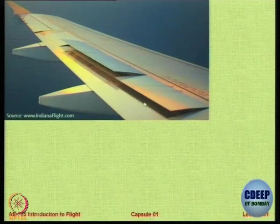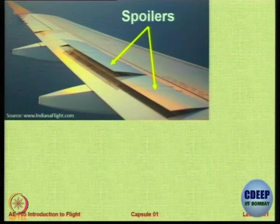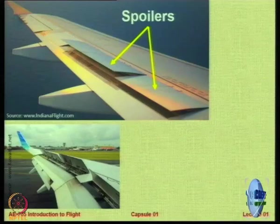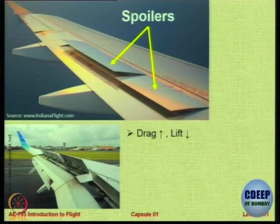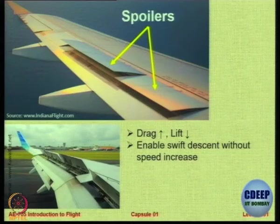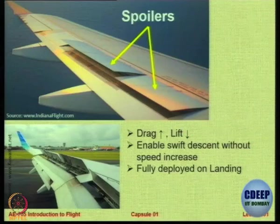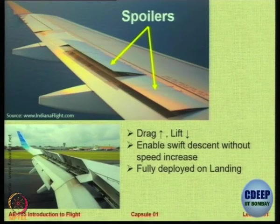What are these devices? They are spoilers. After landing you want to kill and spoil the lift, so you put a flat plate up to create more drag, which helps reduce landing distance. Spoilers kill the lift and allow you to descend swiftly without a speed increase; otherwise landing distance and impact velocity can become very large. These are deployed on landing — typically automatic as soon as the landing gear touches down. Rarely deployed in flight as it is very dangerous.